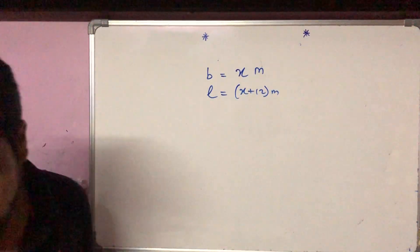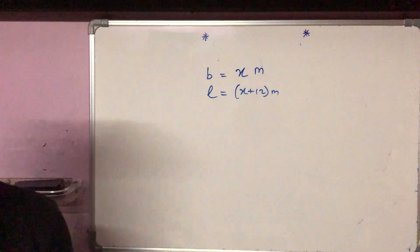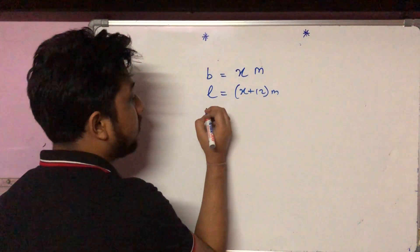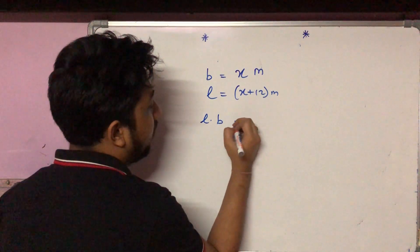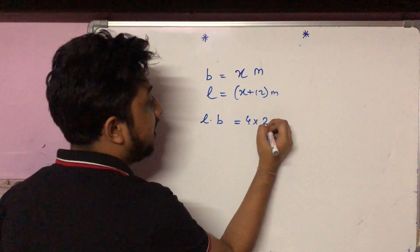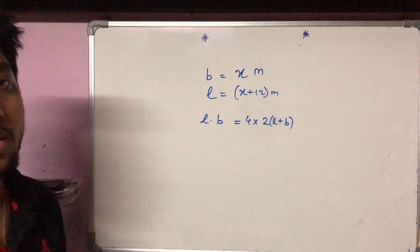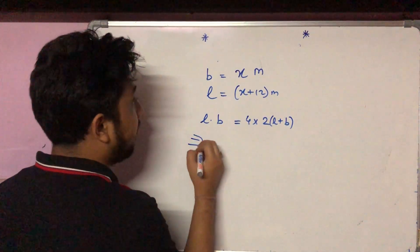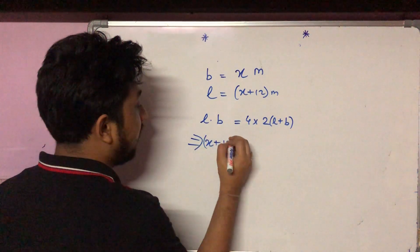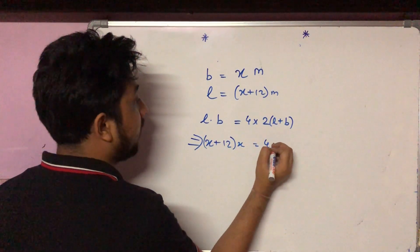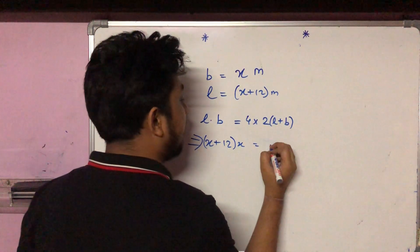We are told that the area is equal to 4 times the numerical value of the perimeter. Area is length into breadth, so length into breadth is equal to 4 times the perimeter, which is 2 into (l plus b). So x plus 12 into x equals 4 into 2, which gives us 8.